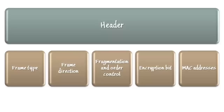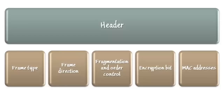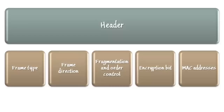The second attribute in the frame header indicates the direction of the frame — that is, whether the frame is being sent from a client to the wireless access point or from the wireless access point to a client. The third part handles fragmentation and order control, since wireless messages are subdivided into frames and it is necessary to track the order and sequencing of each frame. The fourth part is an encryption bit, which indicates whether the frame uses Wired Equivalent Privacy or WEP-based encryption. Finally, the header contains the MAC addresses of the sender and receiver so that all wireless devices within range can determine whether the frame is meant for them.